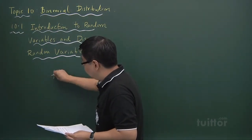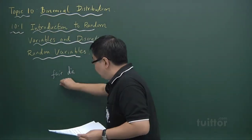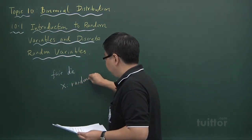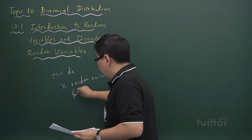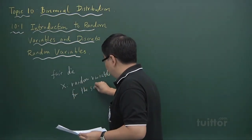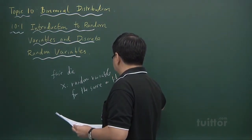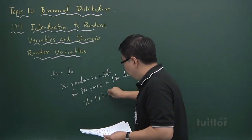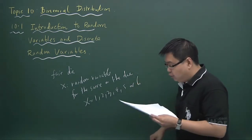if you define x to be the random variable for the score on a die, then my x values will be 1, 2, 3, 4, 5, or 6.